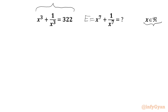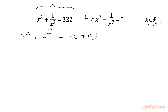Let's get started by writing one algebraic formula first, which is a³ + b³ = (a + b)³ − 3ab(a + b).